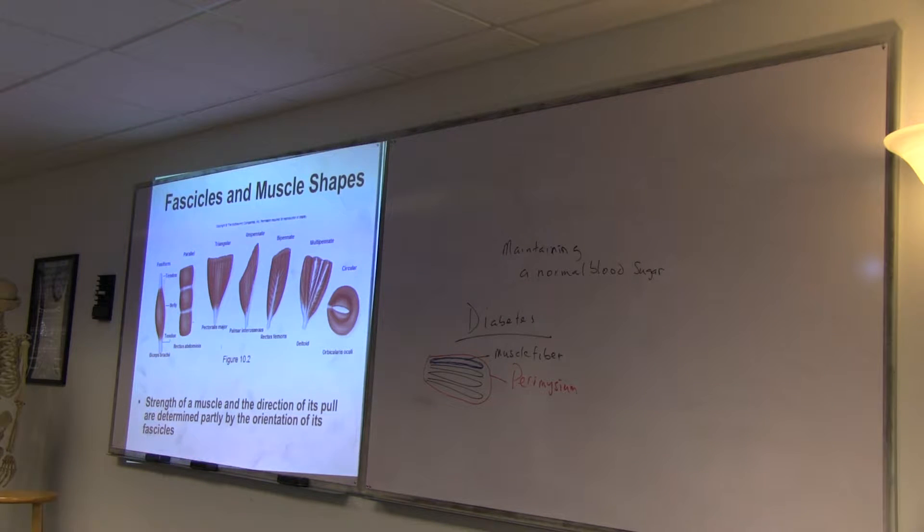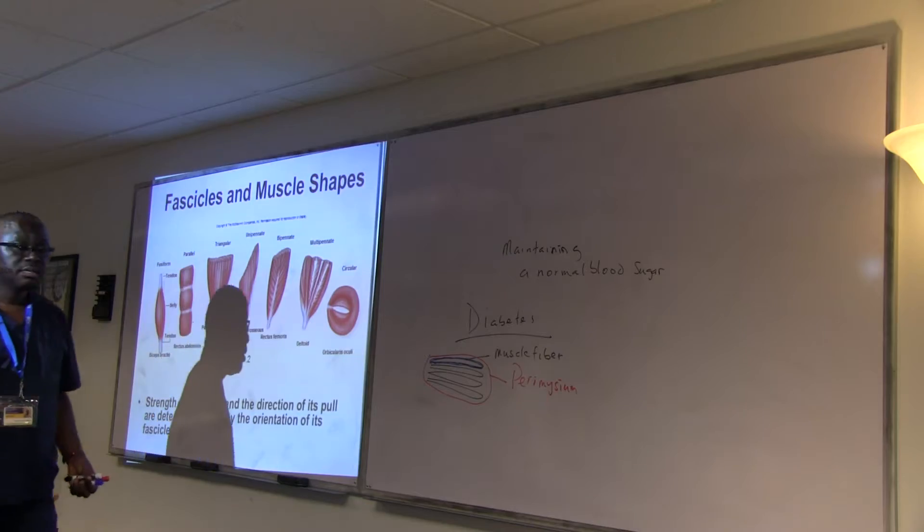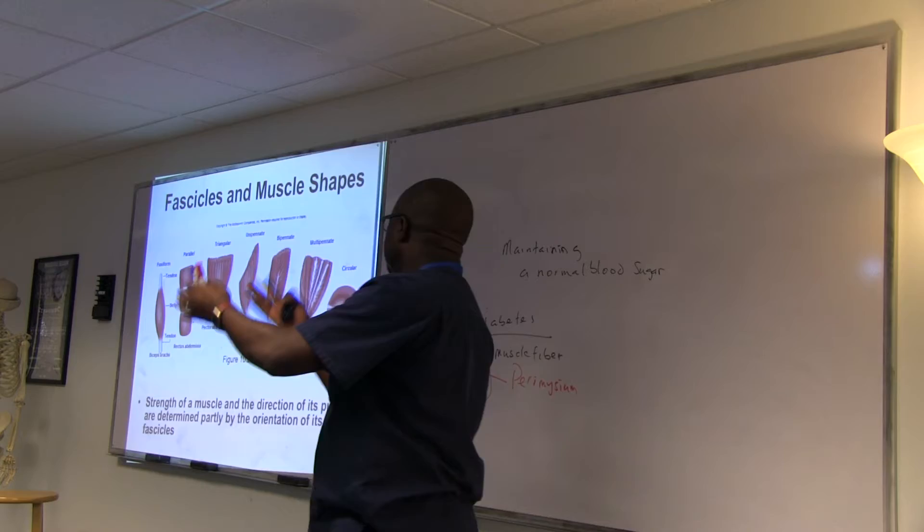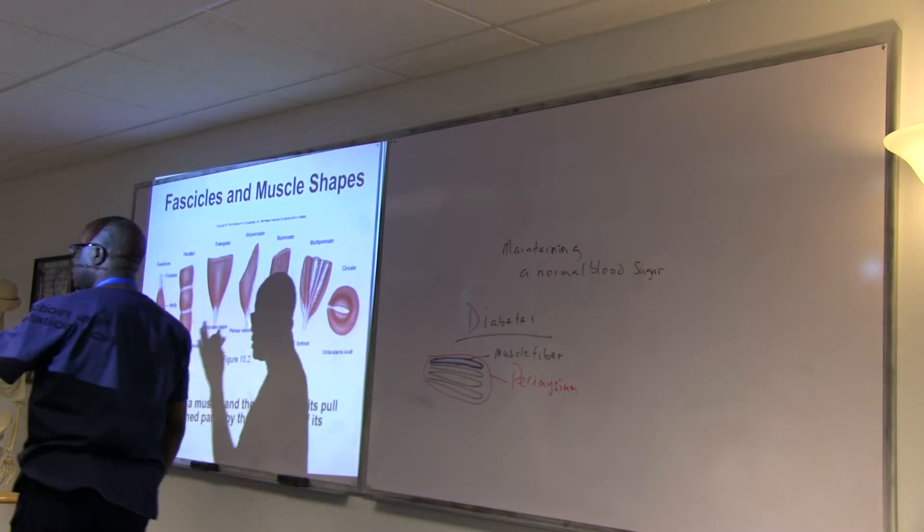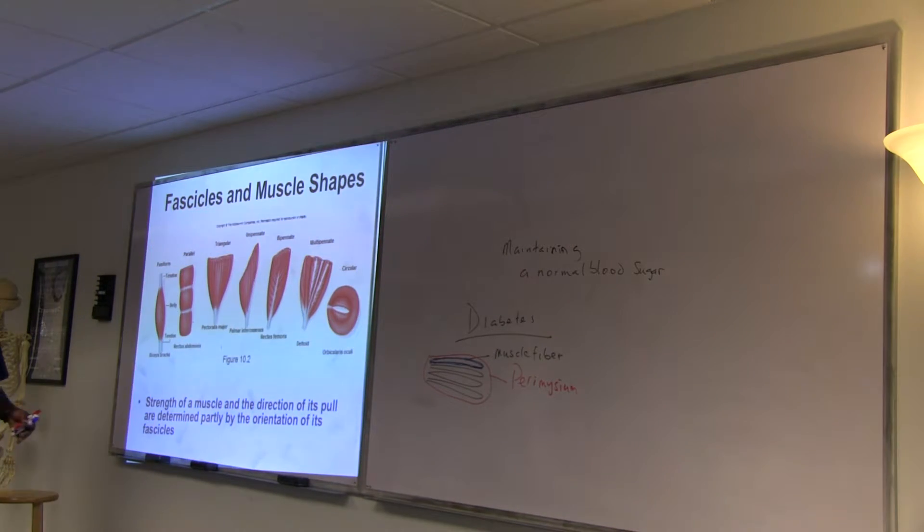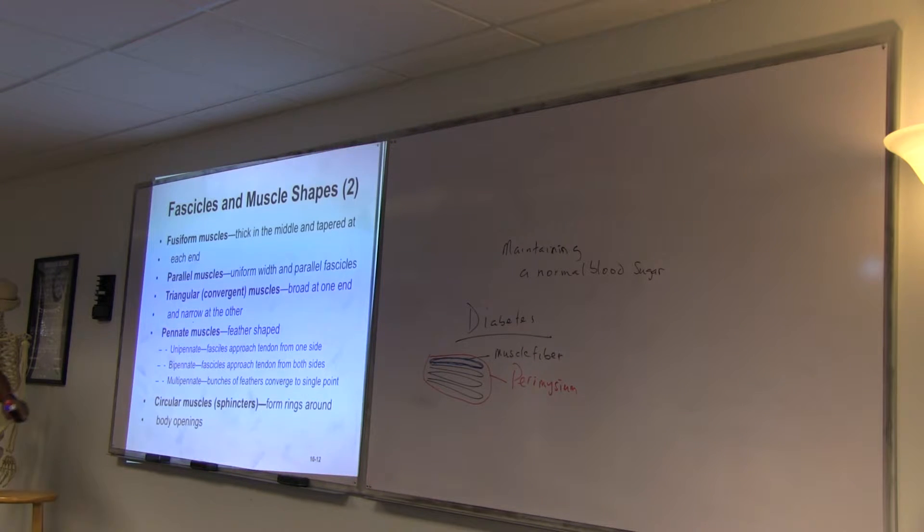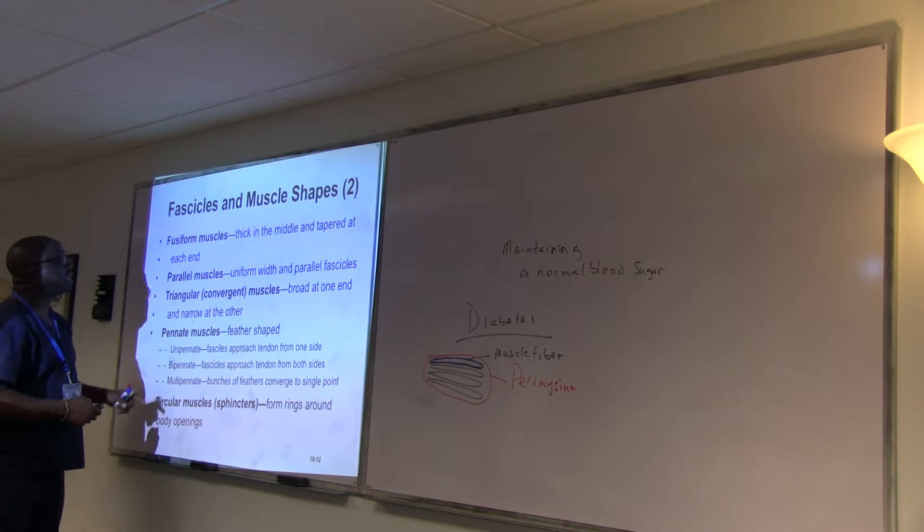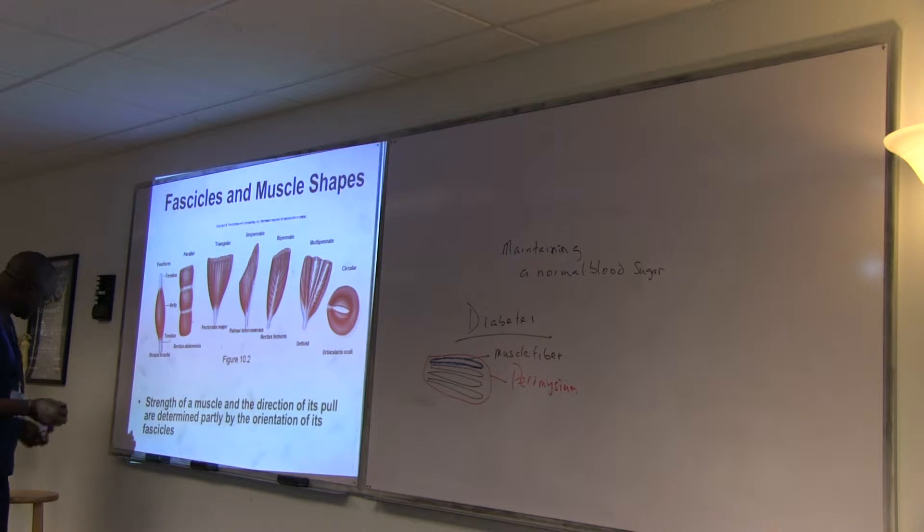So muscles are shaped based on the direction of what we call the fibers, or their fascicles, their direction. And this also helps in the action. So it tells about what action they're going to produce. For instance, the fusiform muscles, what is it? They are thick in the middle, and at their end, they taper out.